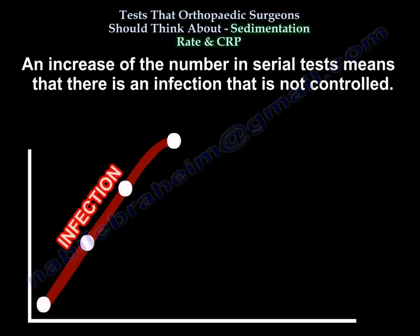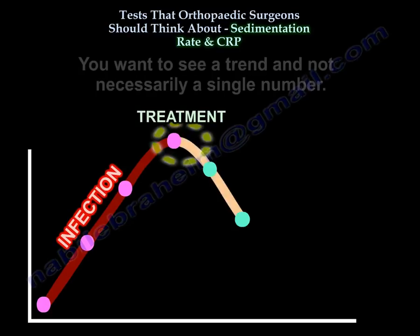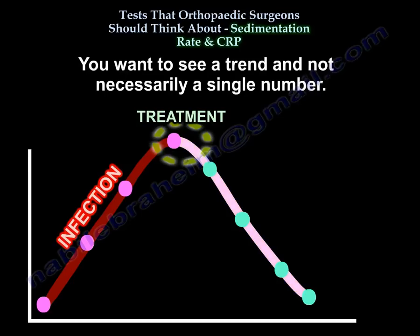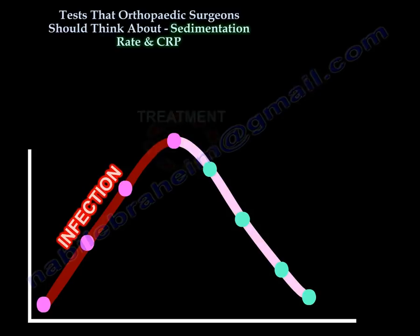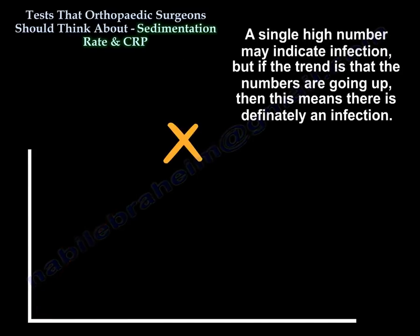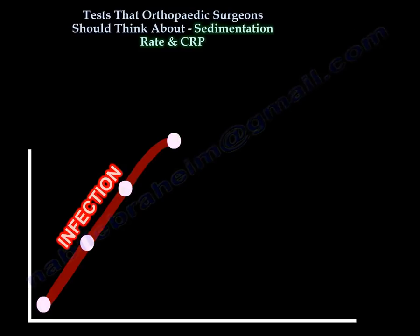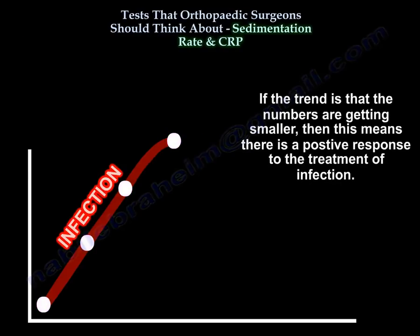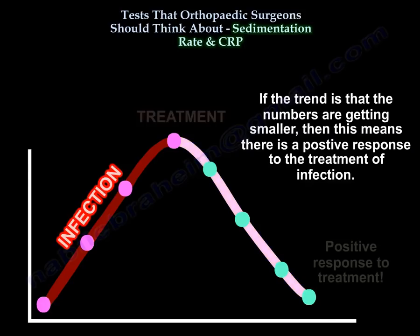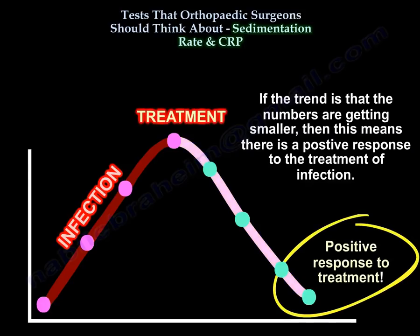An increase in the numbers in serial tests means there is an infection that's not controlled. You want to see a trend, not necessarily a single number. A single high number may indicate infection, but if the trend shows numbers going up, then there is definitely an infection. If the trend shows numbers getting smaller, then there is a positive response to treatment.